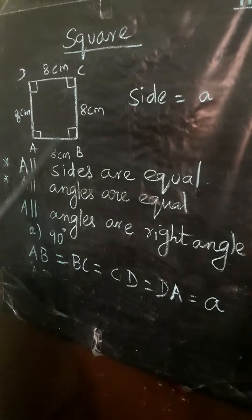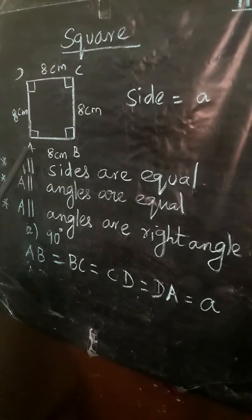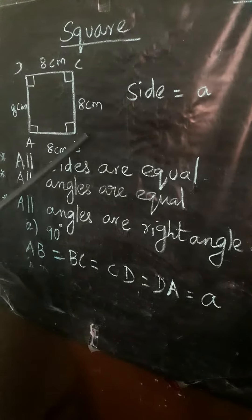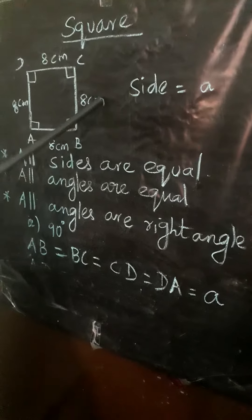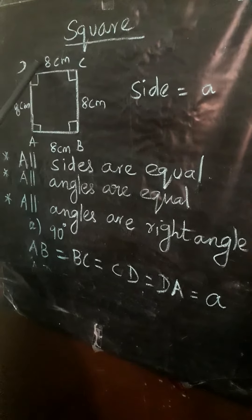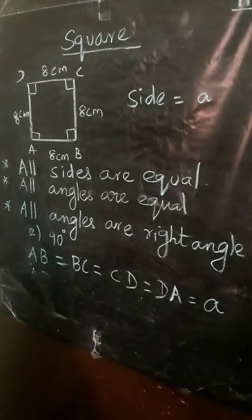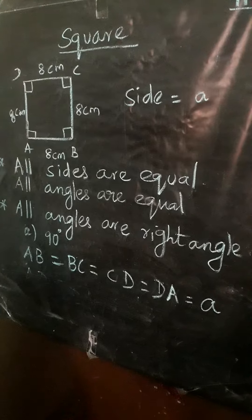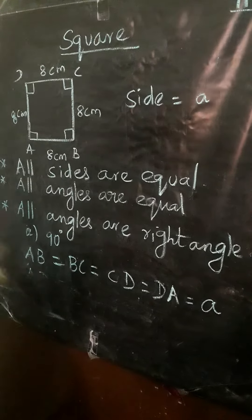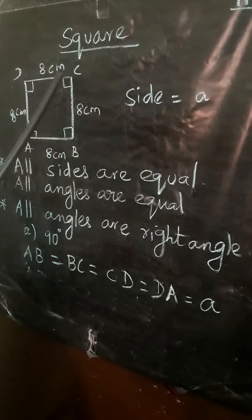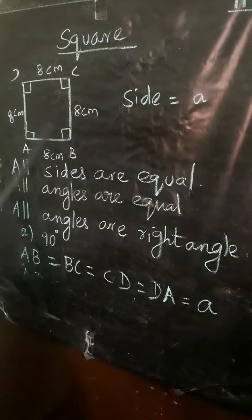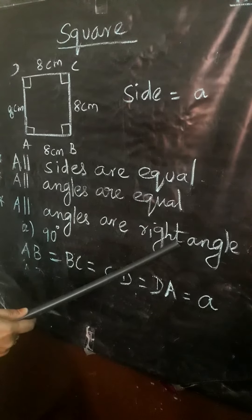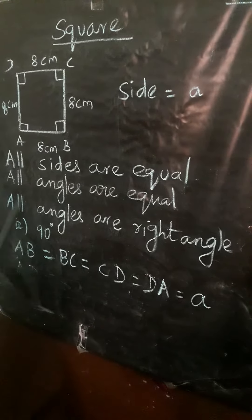We see the figure A, B, C, D. AB equals 8 centimetres, BC equals 8 centimetres, CD equals 8 centimetres, and AD equals 8 centimetres. In a square, all sides are equal. And also, all angles are equal — all angles are 90 degrees, that is a right angle.